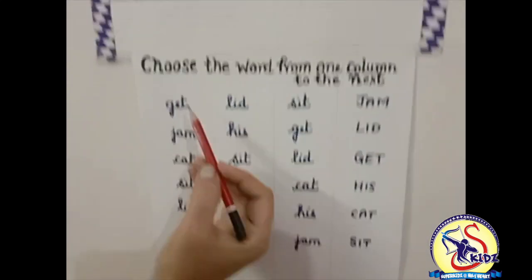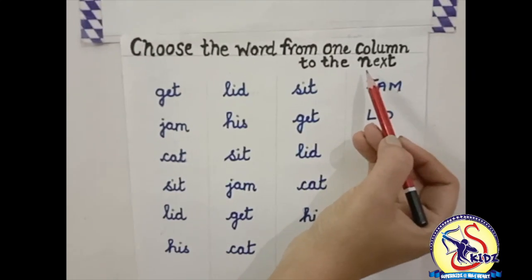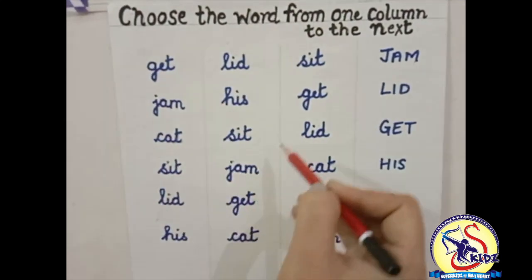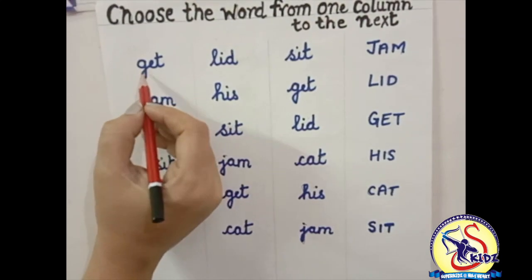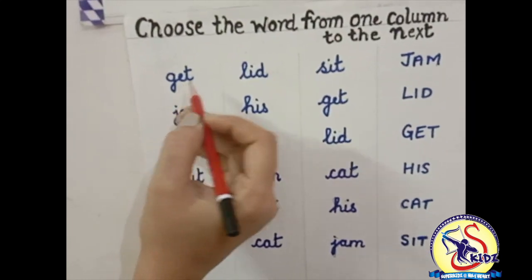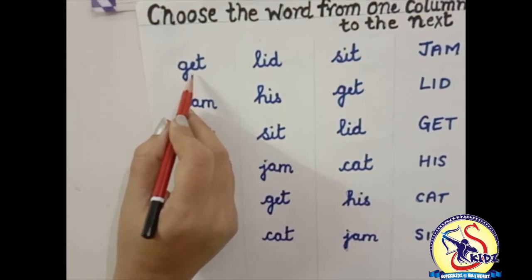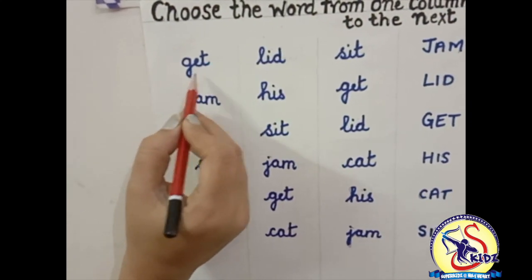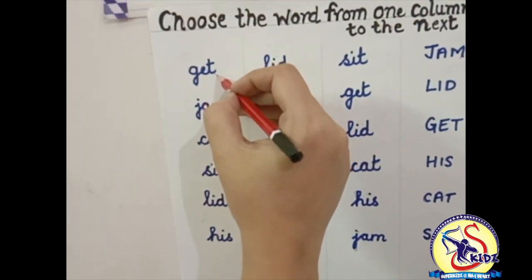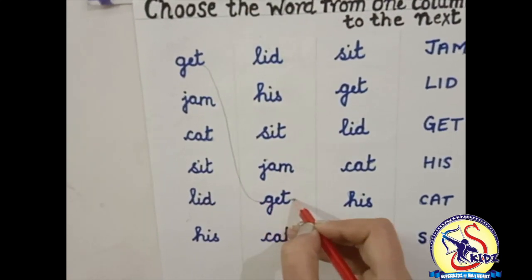Our next exercise is: choose the word from one column to the next. In this exercise, some words are given and we have to choose the same word from all the lines. Our first word is G-E-T, get. We have to choose this word in these three lines as well — here get is written. Let's find out the word get in another line. Yes, we have to match this word. Now move to the next line — here is the word get.